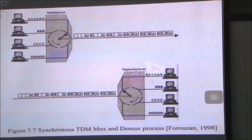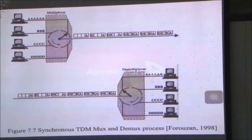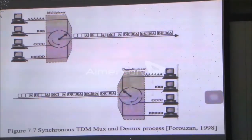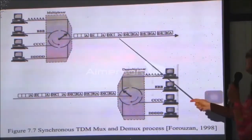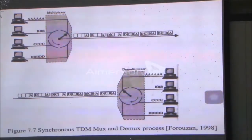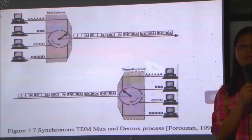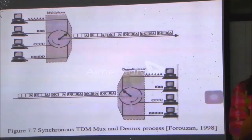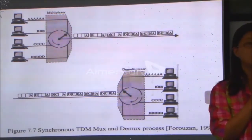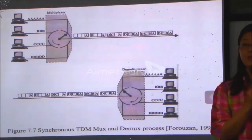Now about statistical TDM — it's not in the sheet, but it's more complex than synchronous TDM. Statistical TDM tries to solve the problem where someone has nothing to say. In synchronous TDM, Amonwit has to wait 10 minutes before he can speak. But in statistical TDM, he doesn't have to wait.